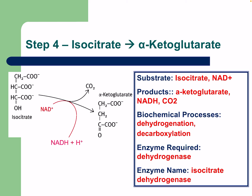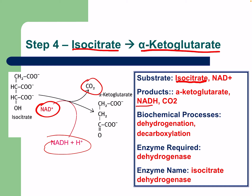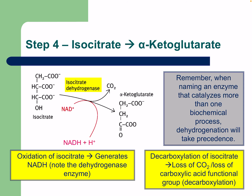Now moving into step four: isocitrate to alpha-ketoglutarate. Isocitrate and NAD+ react to produce alpha-ketoglutarate, NADH, and CO2. This is both dehydrogenation and decarboxylation, catalyzed by isocitrate dehydrogenase. Enzymes are named after dehydrogenation before other reaction types. The oxidation of isocitrate generates NADH, and decarboxylation of isocitrate causes the loss of CO2 through removal of a carboxylic acid functional group.